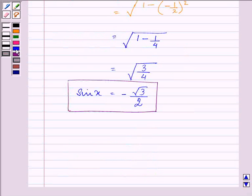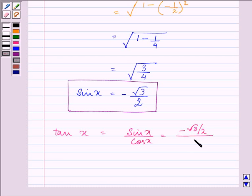Further, we can find the value of tan x as minus root 3 by 2 divided by minus 1 by 2. So on simplification, we have the value of tan x as root 3.